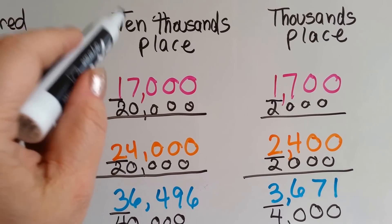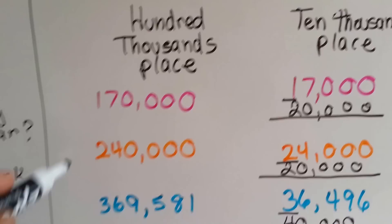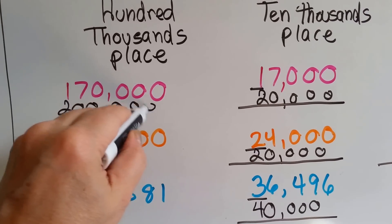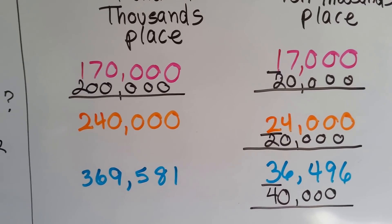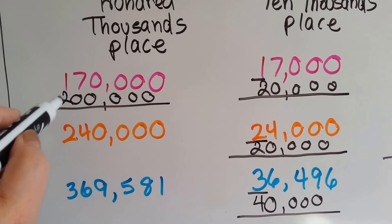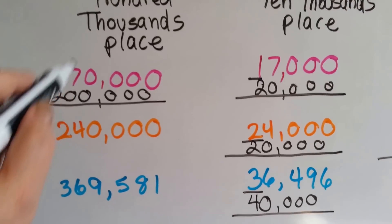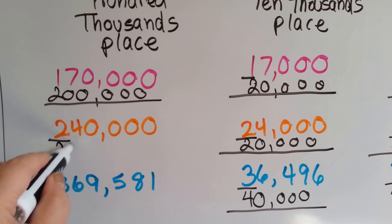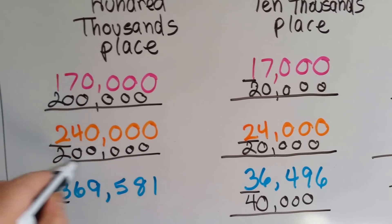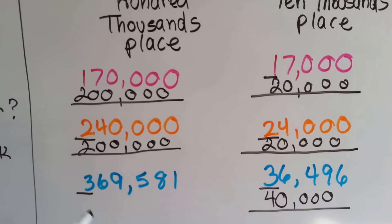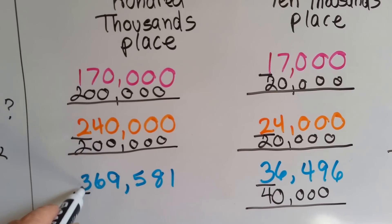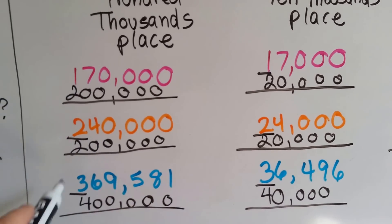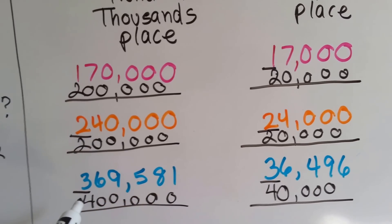If you're rounding to the ten-thousands place, the 7 tells the 1 to go up. When it's finished, it turns into a 0 and so does everybody else — if there are other numbers here, it rounds to 200,000. To the 100-thousands place, the 4 tells the 2 to stay the same — it becomes a 0 when done and rounds to 200,000. The number to the right is a 6 and it tells the 3 to go up to 4. Everybody else becomes a 0. 369,581 rounds to 400,000.